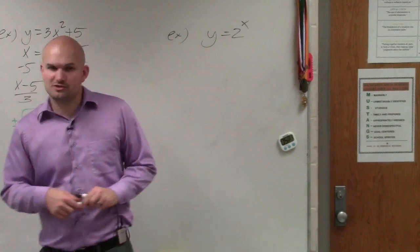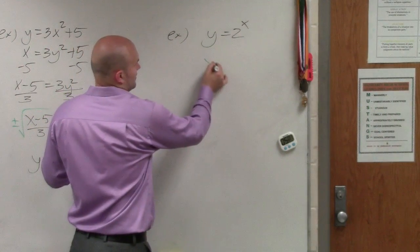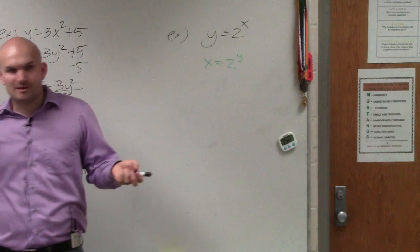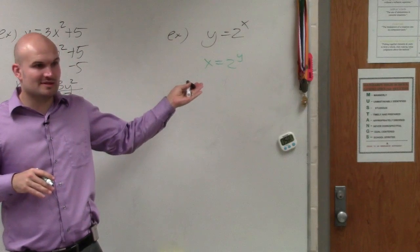Because if we were just going to follow these rules and so forth, we would have x equals 2 to the y, right? But then to solve for y, we automatically come into a problem. And this is what I was hoping you guys would at least come into.